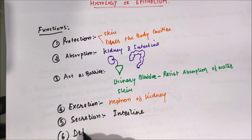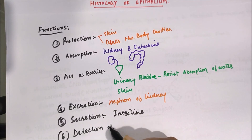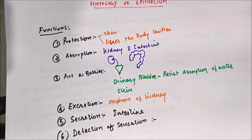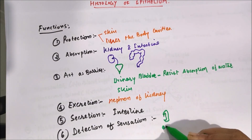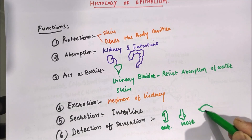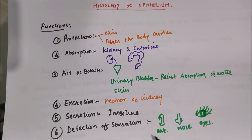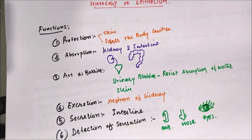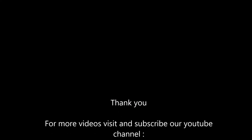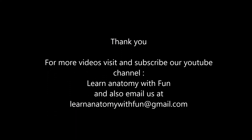Another function is the detection of sensation. Some epithelium, along with nervous tissue, forms special sense organs. These may be present in the ear, nose, and eye, related to hearing, smell, and vision. These are our special sensations, and these are the functions of the epithelium.